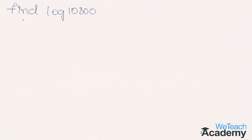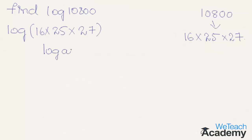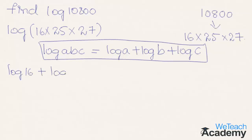Now let us proceed and find the value of log 10800. Here 10800 is nothing but 16 into 25 into 27. So log 10800 can be written as log of 16 into 25 into 27. This is in the form of log abc, which is equal to log a plus log b plus log c. So using the law of logarithm of a product we can write this as log 16 plus log 25 plus log 27.